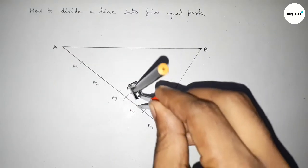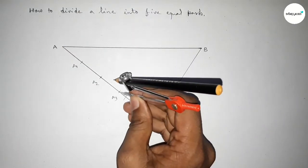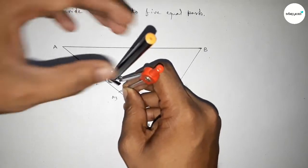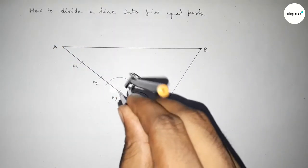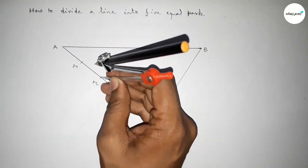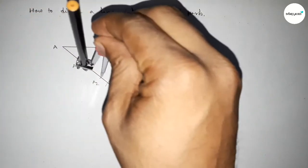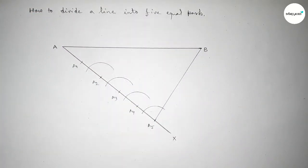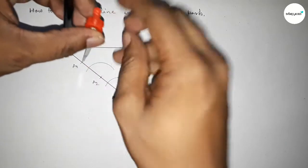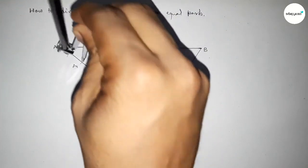Similarly, drawing arc on the remaining points. So first drawing here an arc on the point A1, A2, A3, and A4 respectively.